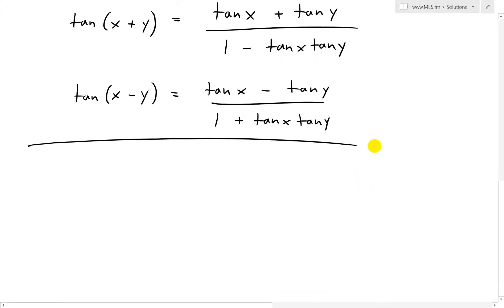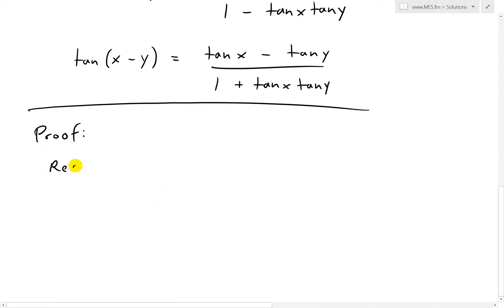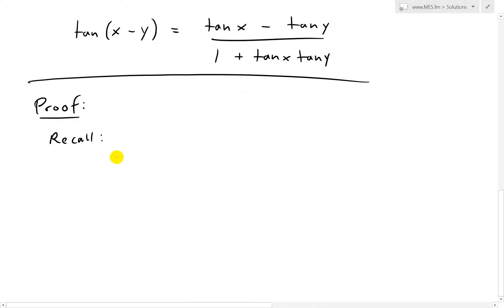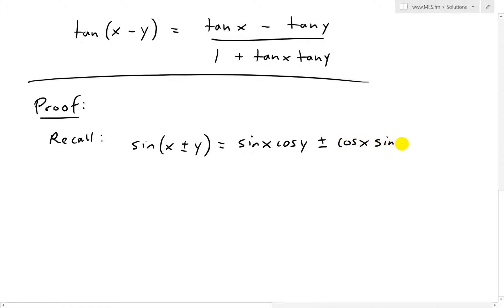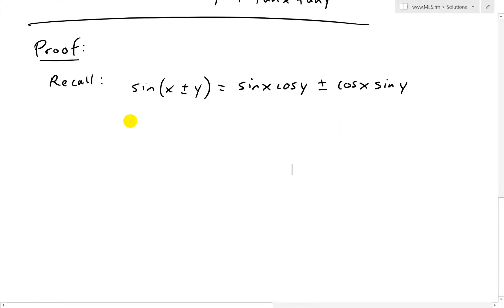So let's go ahead and solve for the proof. Recall from my earlier videos where I showed the trig identities for sine of x plus or minus y. This equals sine x cos y plus or minus cos x sine y. If it's a plus, we add a plus; if it's a minus, we get a minus there. The proof for this is in the video description below in my earlier video — I'll put links to that.